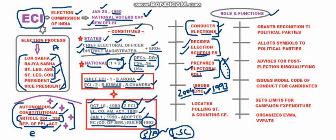ECI also locates polling stations and counting centers. It sets up the infrastructure needed for casting votes, provides security, and organizes the machinery required at these stations. It also determines where the votes polled will be counted.